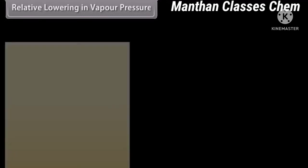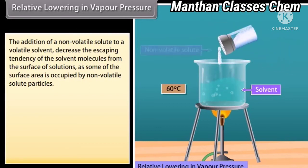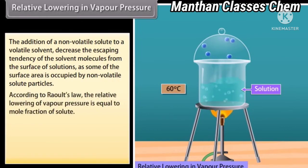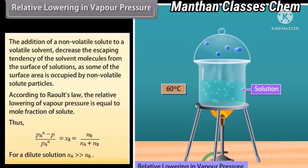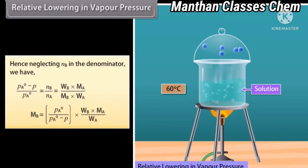Relative Lowering in Vapor Pressure: The addition of a non-volatile solute to a volatile solvent decreases the escaping tendency of the solvent molecules from the surface, as some of the surface area is occupied by non-volatile solute particles. According to Raoult's law, the relative lowering of vapor pressure equals the mole fraction of solute: (P°A − P) / P°A = XB = NB / (NA + NB). For a dilute solution where NA >> NB, the molecular mass MB = (P°A / (P°A − P)) × (WB × MA / WA).